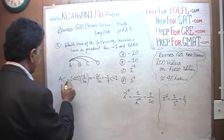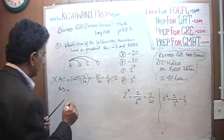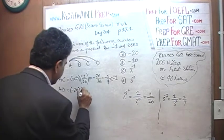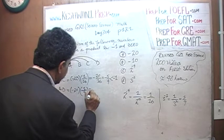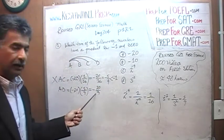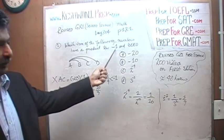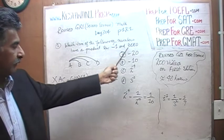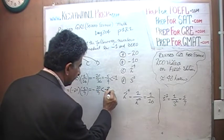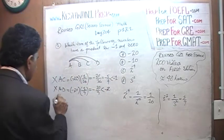Let's try A times D. A times D is negative 20 times 1 over 9, which is negative 20 over 9. Now negative 18 over 9 would have been negative 2, which is already outside our range. This is more negative than negative 2, so it's not going to work. We are looking for something between negative 1 and 0, so we are done with A.